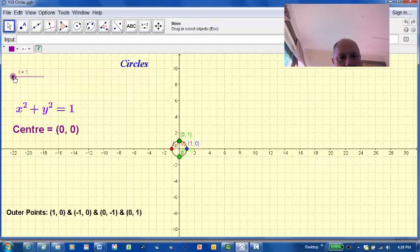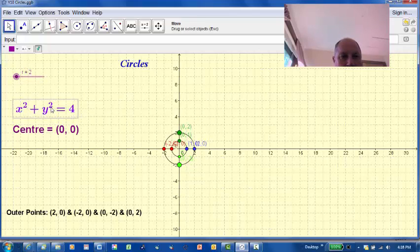The next thing we will do is change the value of r to 2. So you will see that now the circle has a radius of 2. But the equation is actually x squared plus y squared equals 4, which is actually 2 squared.